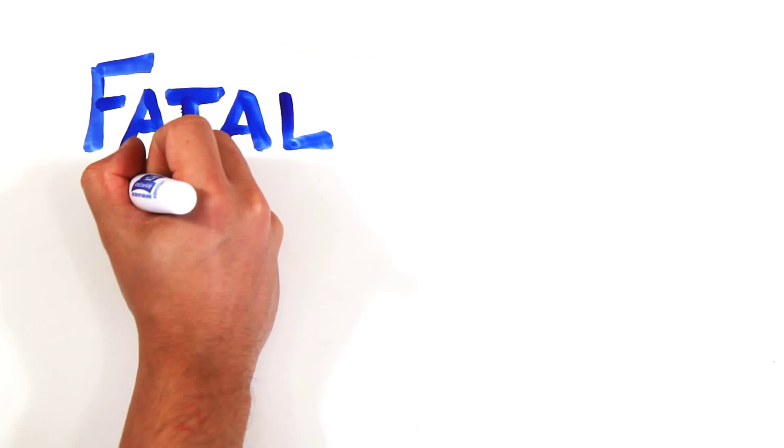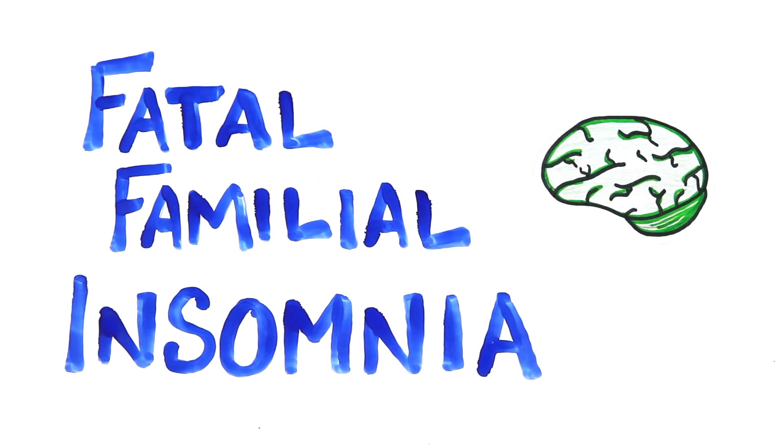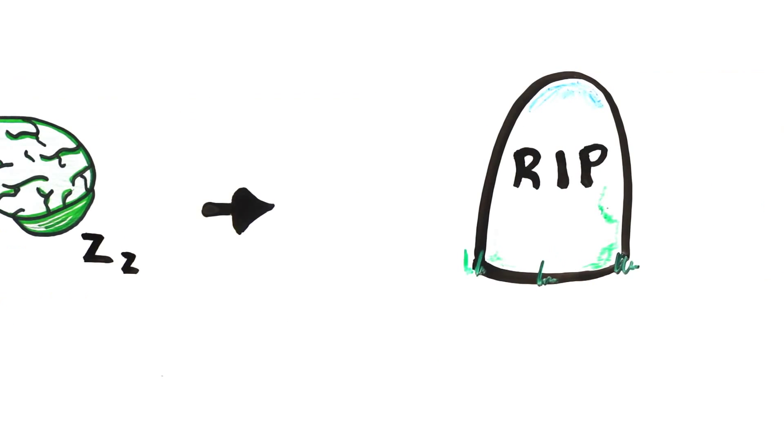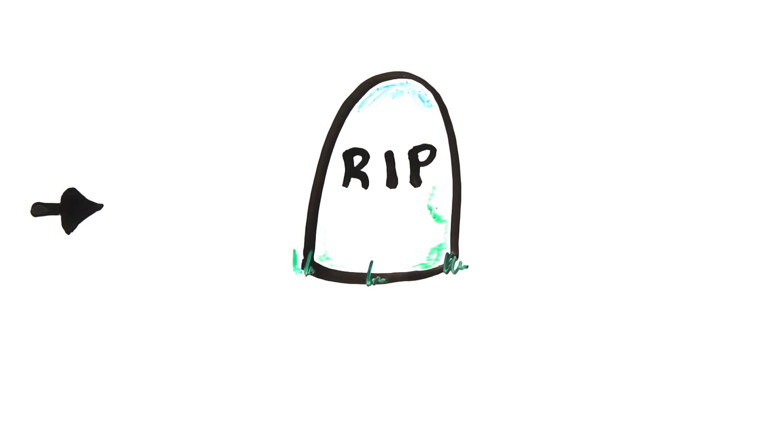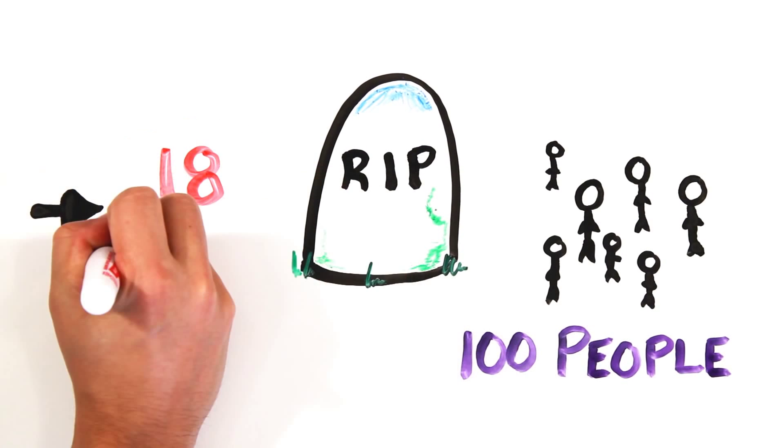Perhaps we should look at fatal familial insomnia for an answer. A rare genetic disease of the brain which causes progressively worsening insomnia or sleeplessness, leading to hallucinations, dementia and ultimately death. This disease has only affected around 100 people in the world, but their average survival span was around 18 months.